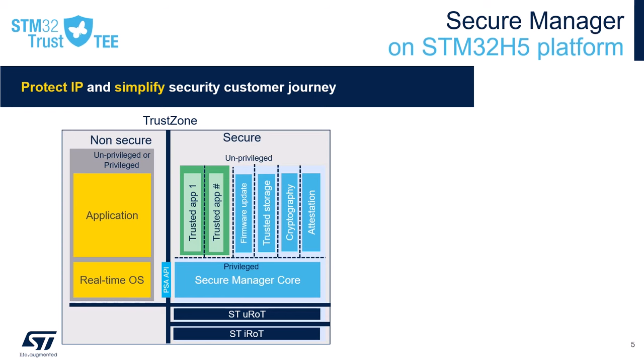What's in the scope of the Secure Manager? The Secure Manager is all what you see in light blue in this picture, while in yellow it's the user application. ST offers a certified dual-stage root of trust in dark blue: the ST iROT, which is the first-stage immutable root of trust already stored inside your device when you buy it — the primary bootloader to ensure authenticity and integrity of the second-stage bootloader. And the STU ROT, which is the second-stage updatable root of trust to ensure the authenticity and integrity of the Secure Manager core, but also of all other components such as the secure modules and the user application.